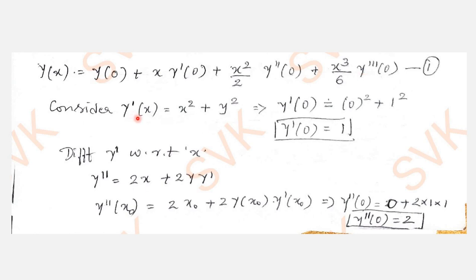Now find y'(x₀). Consider the given derivative: y' = x² + y². Substitute the initial condition x₀ = 0 and y₀ = 1: y'(0) = 0² + 1² = 1.